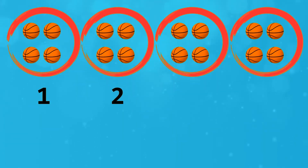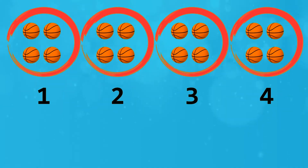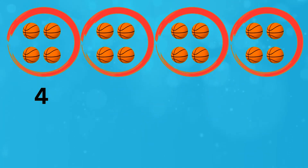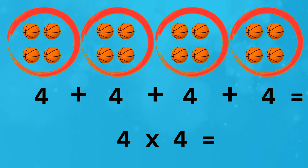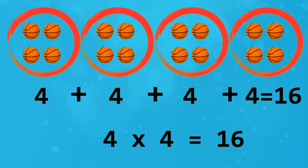How many groups? There are four groups. How many in each group? There are four in each group. How many all together? There are sixteen all together.